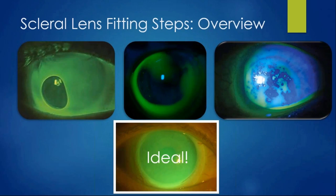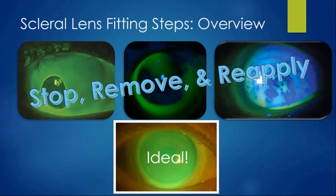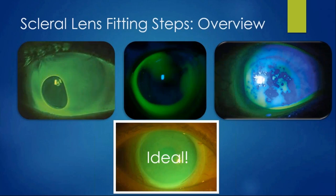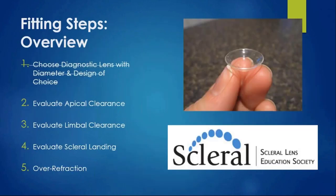In the case of central touch, you'll have to change lenses—go to a diagnostic lens much steeper than what you currently have, because we need to vault the entire cornea limbus to limbus. If you don't have a good ocular surface or have huge bubbles, you won't get anything accurate. Once the surface looks good, step up to evaluating apical clearance. Switch from cobalt blue to white light and put it into an optic section.